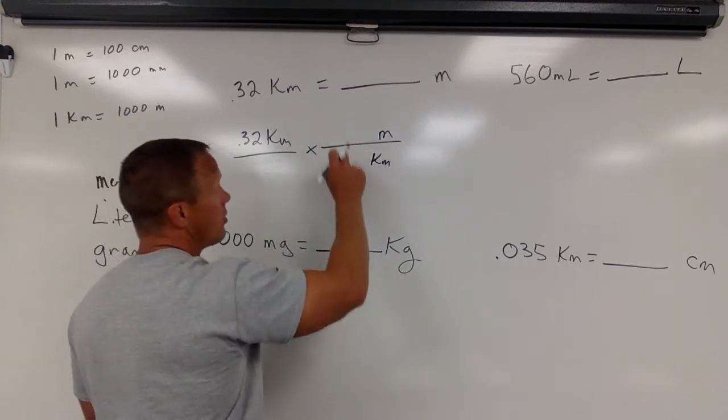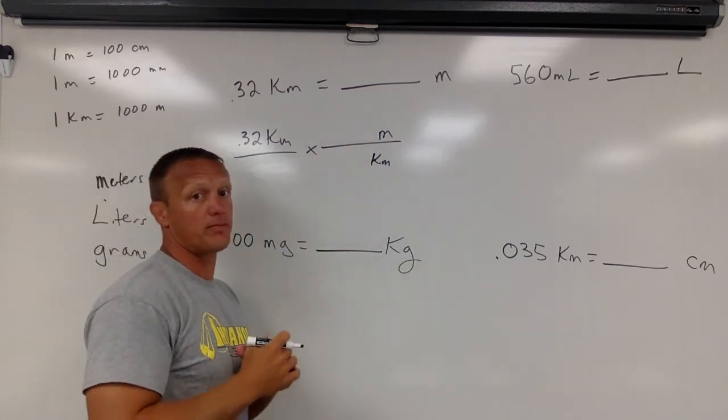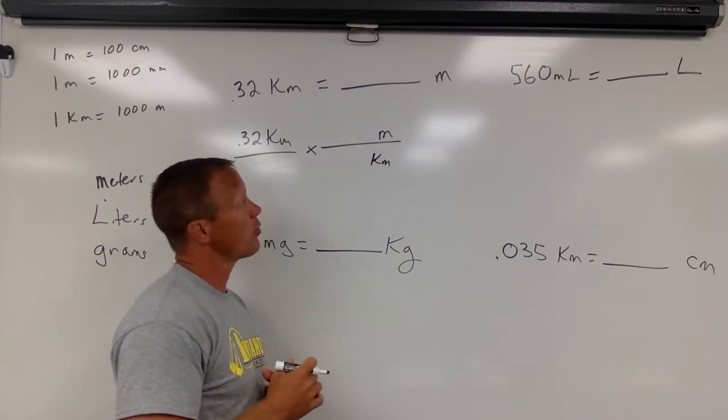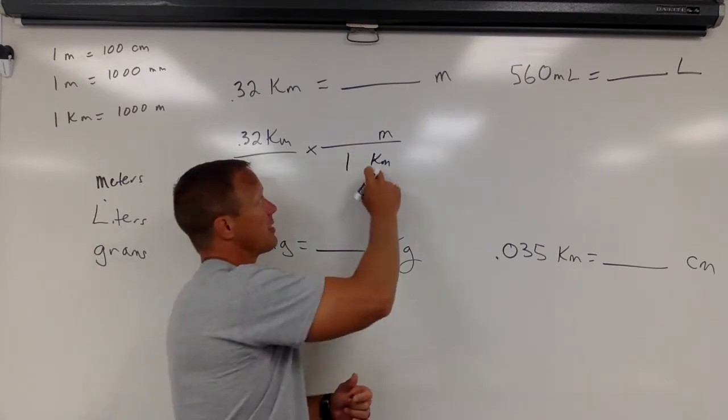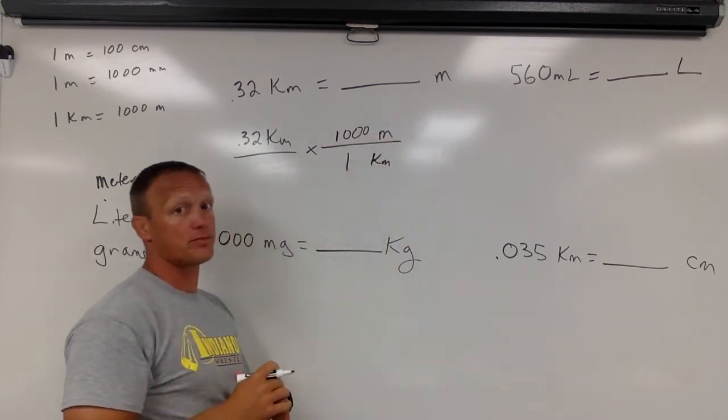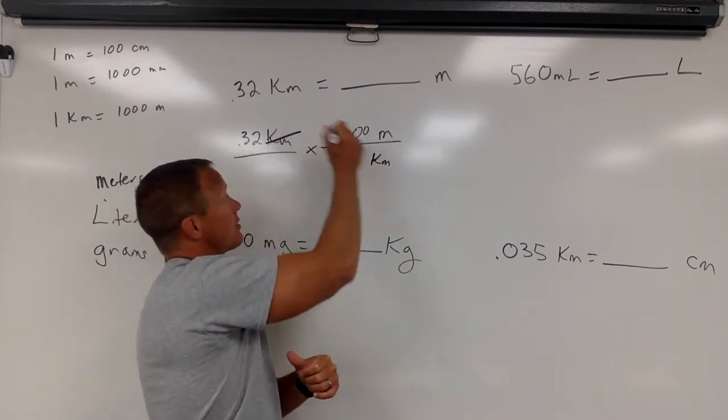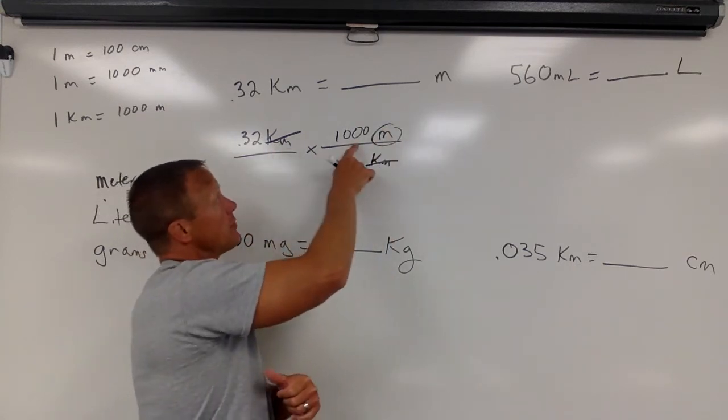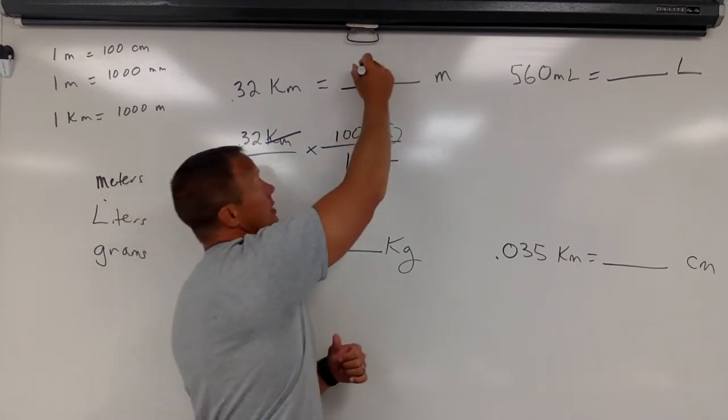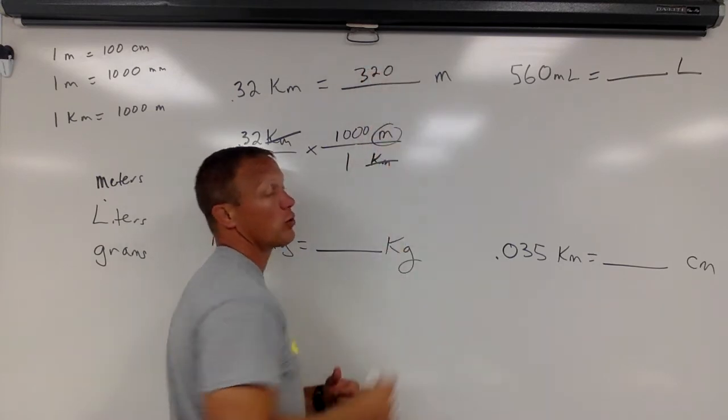The bigger one is kilometers. So I'm going to say every one kilometer, which is quite a ways - kilo means 1,000 - contains 1,000 meters. This label cancels. That one cancels. We have meters right here. We're done. 0.32 times 1,000 would be 320 meters.